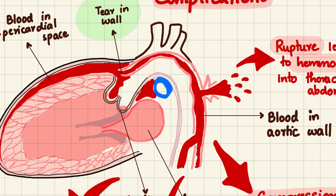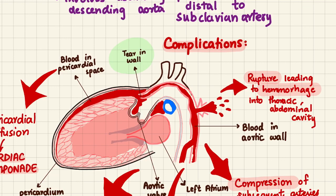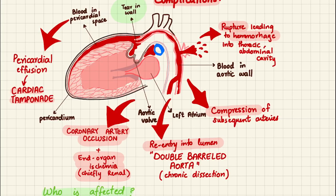Secondly, there can be overall rupture of the aorta, which leads to hemorrhage into the abdominal and thoracic cavity, causing shock. Additionally, blood can re-enter the normal lumen, resulting in the formation of a double-barreled aorta.